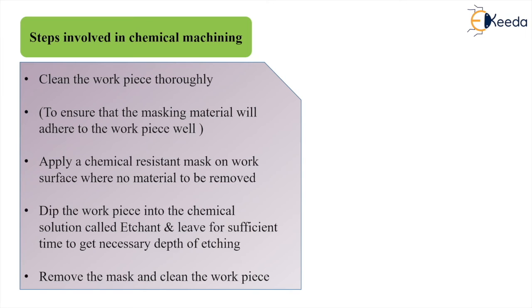The steps in chemical machining are: first, clean the workpiece thoroughly to ensure the masking material will adhere properly. Then apply a chemical-resistant mask on surfaces where no material removal is desired. Next, dip the workpiece into the chemical solution called the etchant and leave it for sufficient time to achieve the necessary depth of etching. Finally, remove the mask and clean the workpiece.